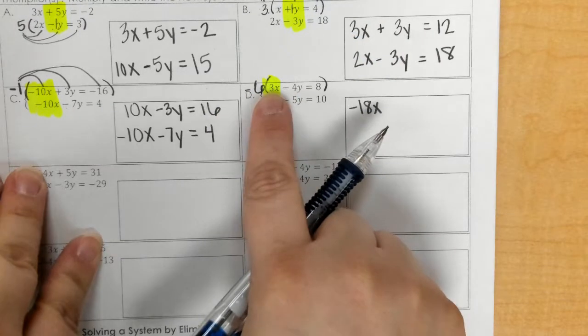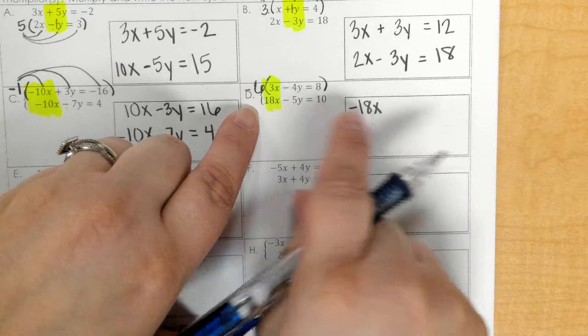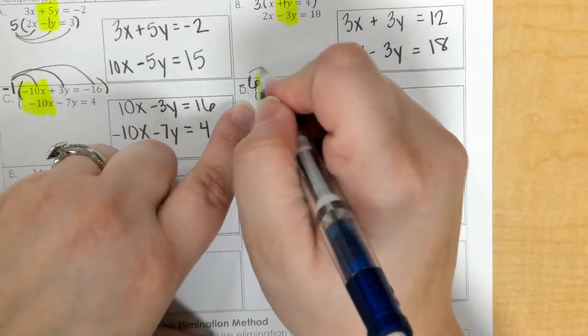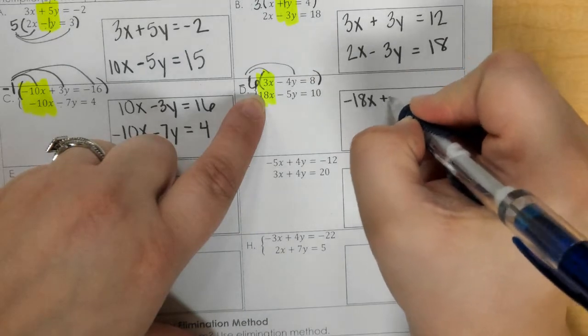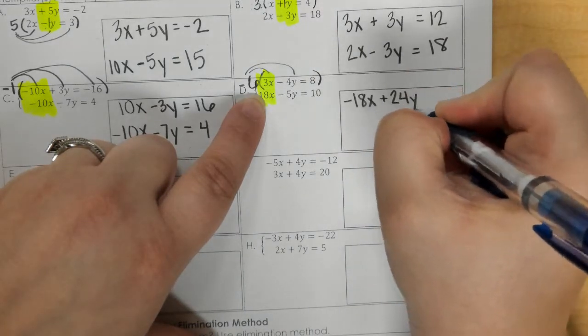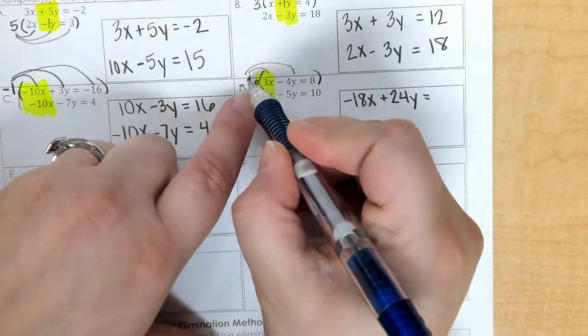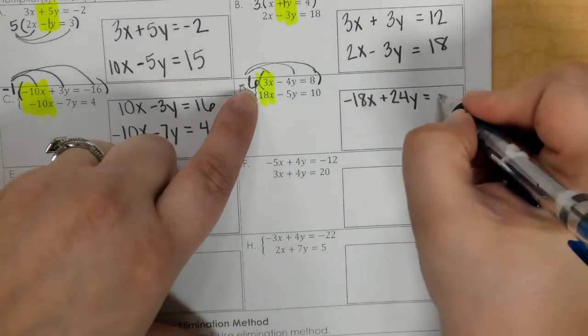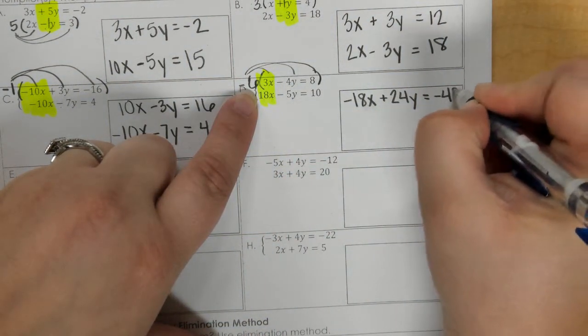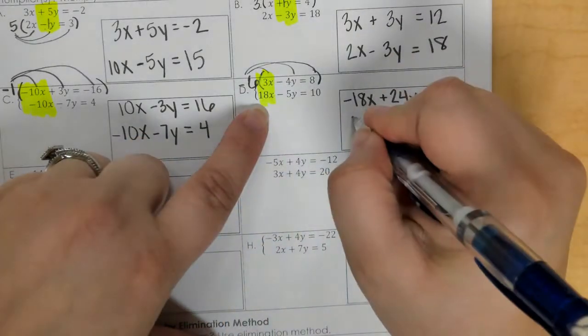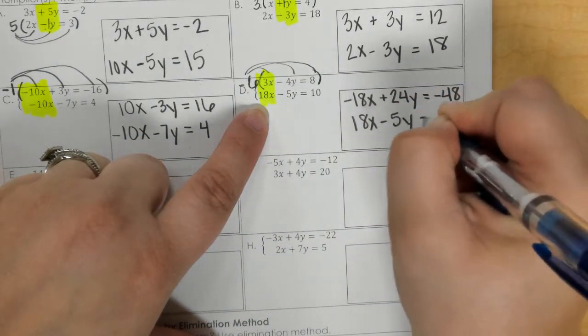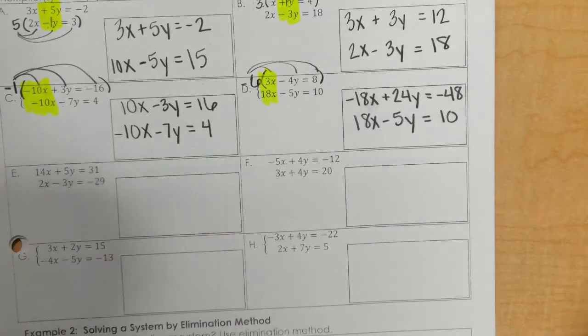So negative 6 times 3, negative 18x. Negative 6 times negative 4y is a positive 24y. And then negative 6 times 8 would be negative 48. Then on the bottom, we just rewrite that.